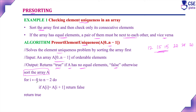Using a for loop from i = 0 to n-2, we check if A[i] equals A[i+1]. If any two adjacent elements are equal, the algorithm returns false, meaning the elements are not unique. If the loop completes without finding any equal pair, the algorithm returns true — all elements are unique.